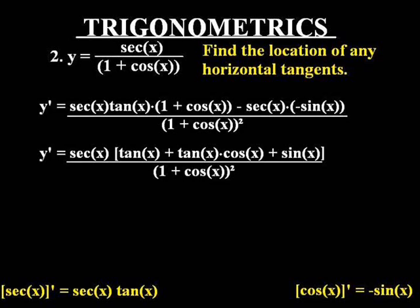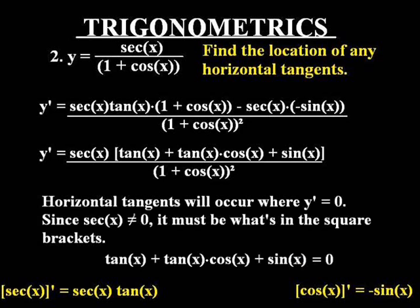we end up with y prime is equal to secant x multiplied by tan x plus tan x cos x plus sine x, all in square brackets, all divided by the denominator squared.